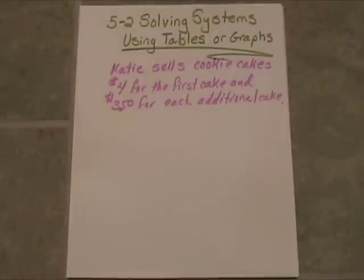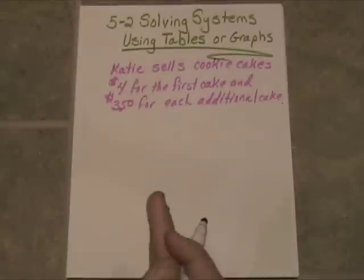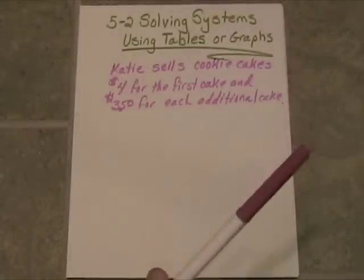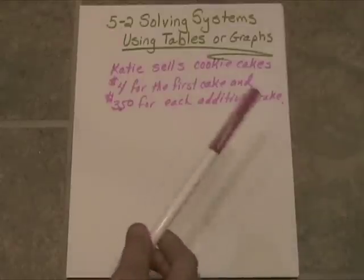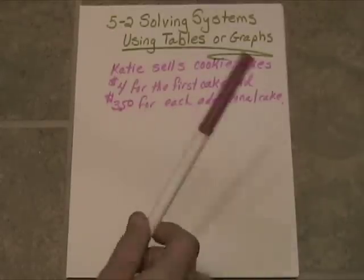Alright, we have Katie, and she sells cookie cakes. Oh, they're gorgeous. They're 12 inches in diameter. They're just beautiful. $4 for the first cake, and if you buy more than one, each additional cake is $3.50.